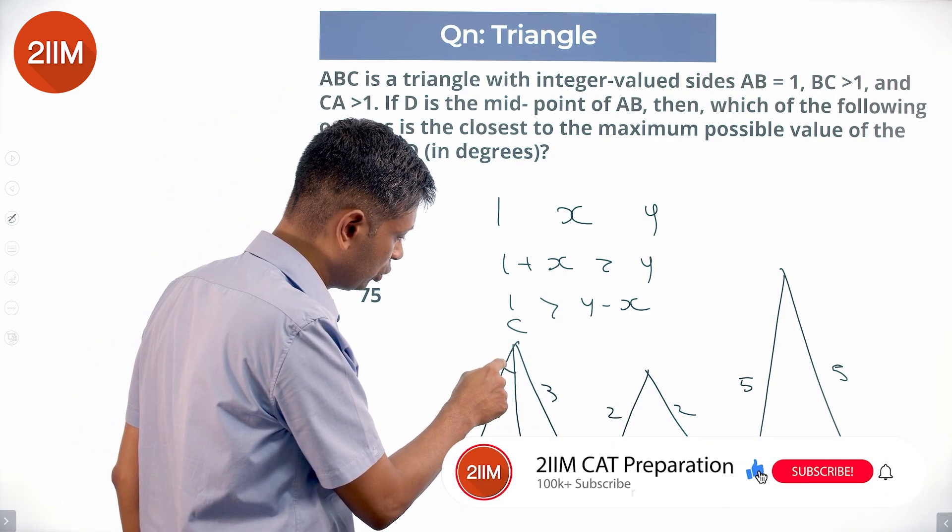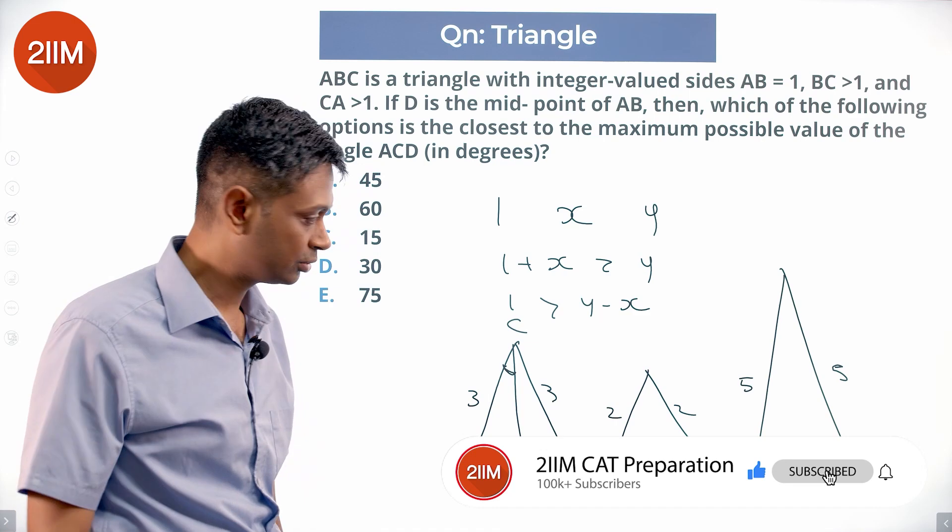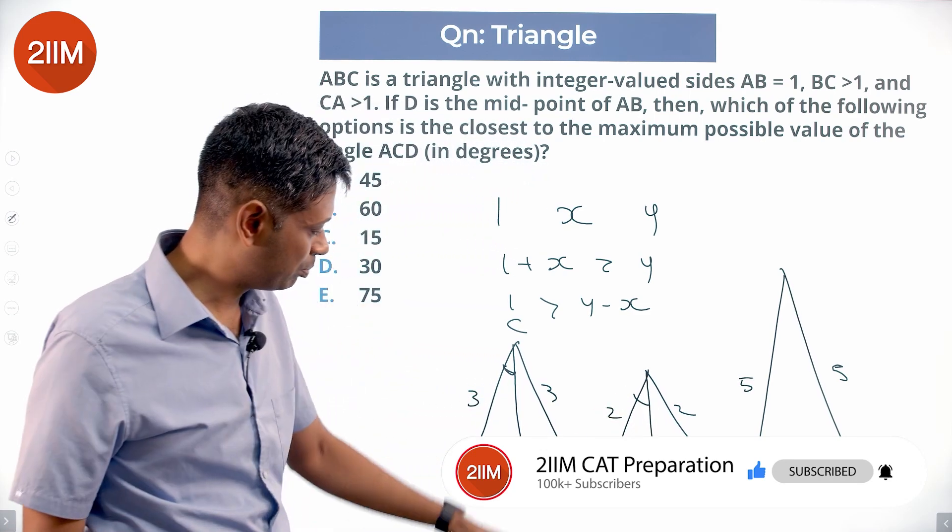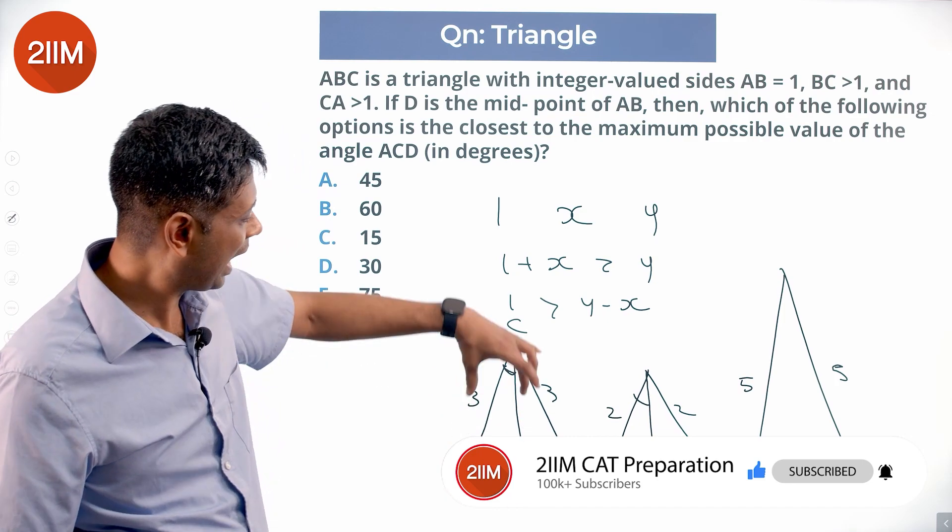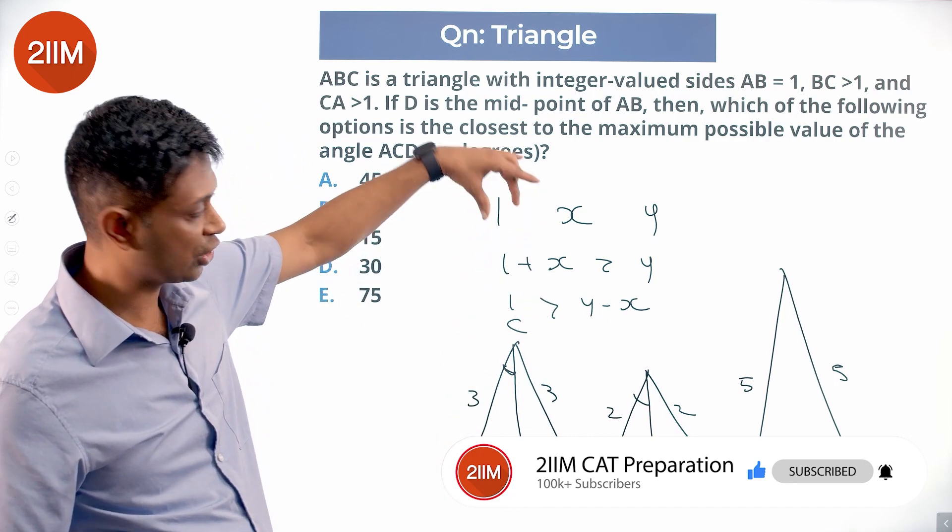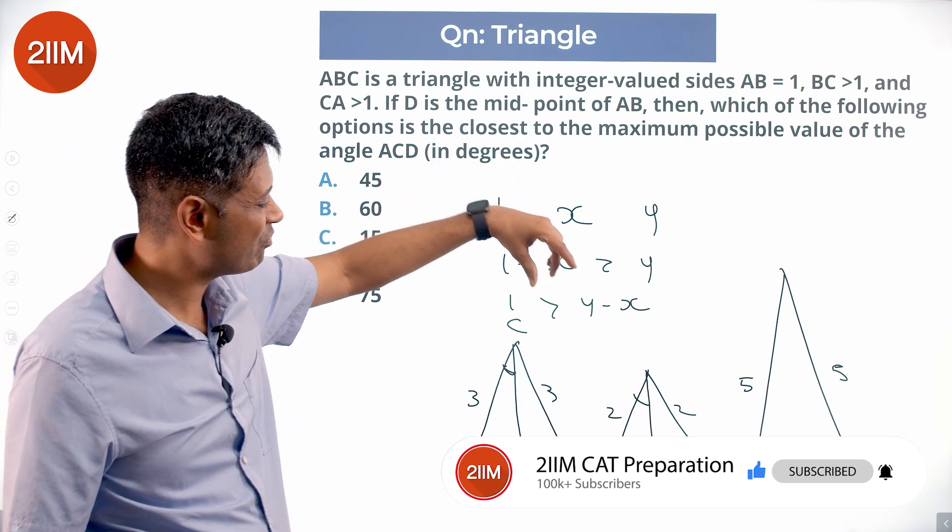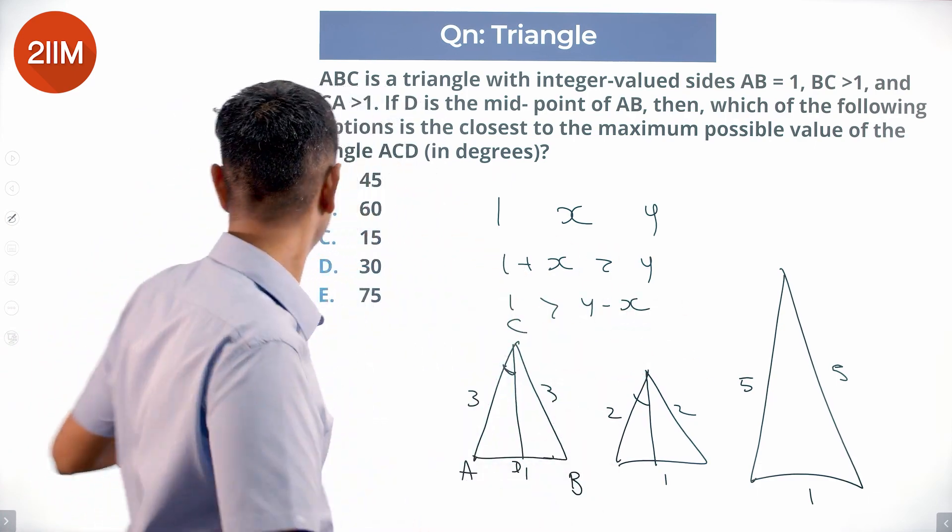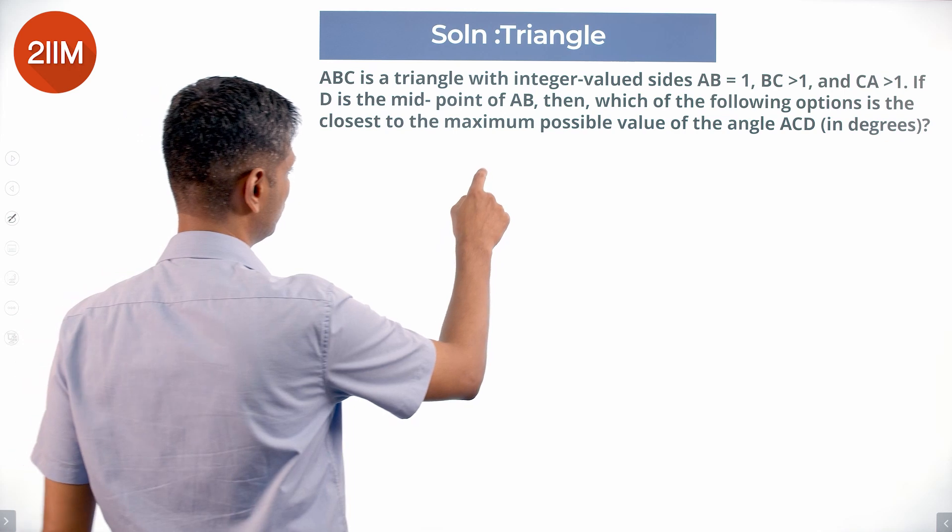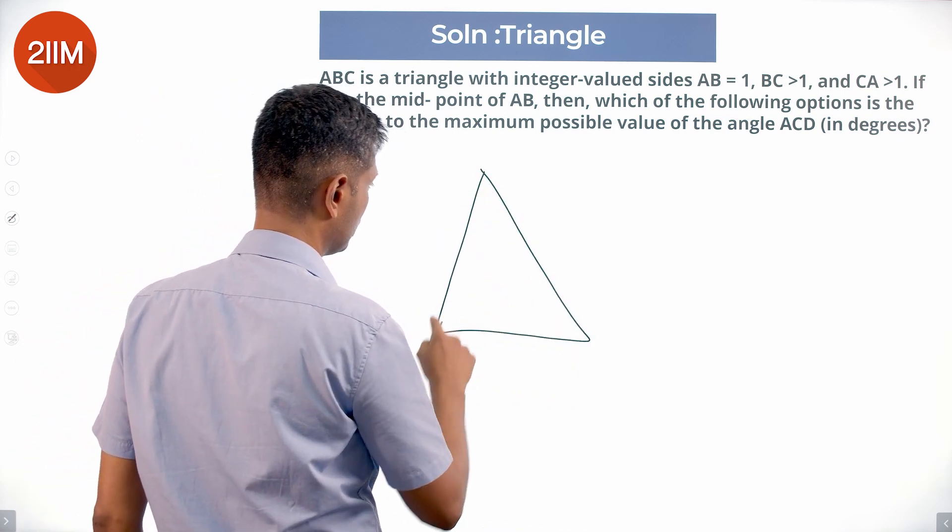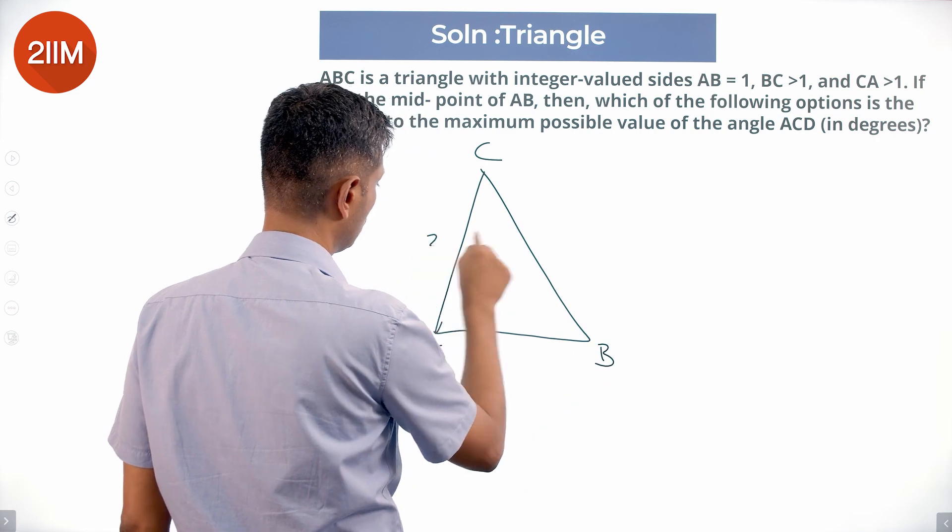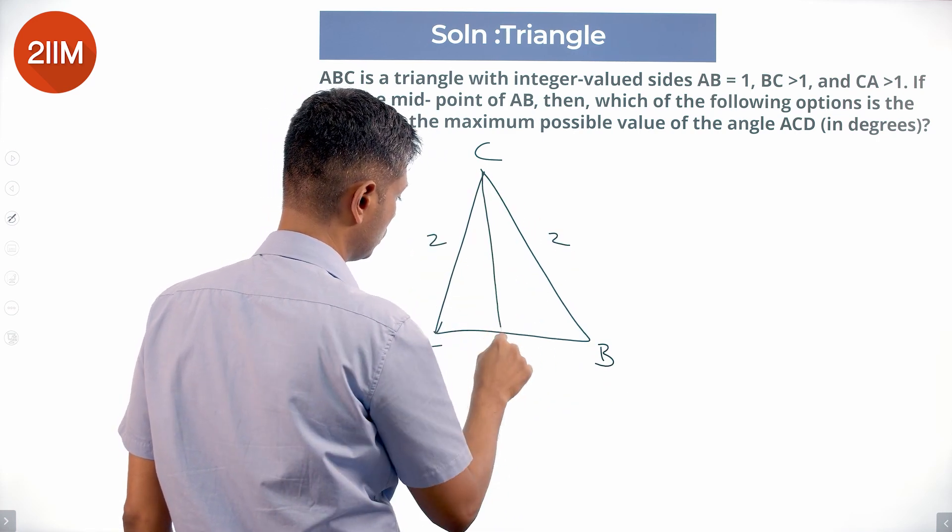Maximum possible value of this angle. So straight away we can sense that this base is set - taking it higher and higher, the angle becomes smaller and smaller. The maximum value will be when this is 1,2,2. Draw this triangle: C, A, B. 2, 2, D, 0.5, 0.5.